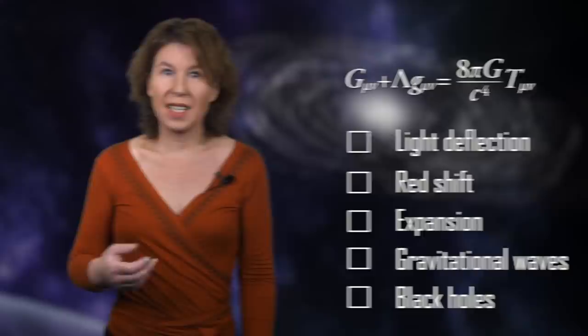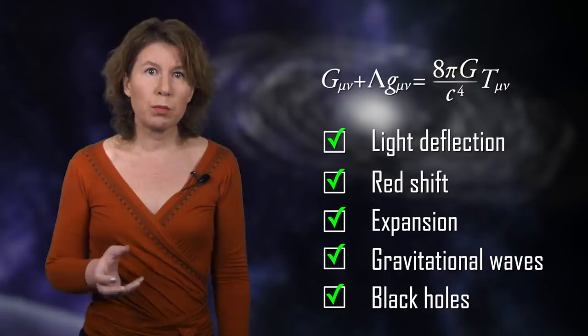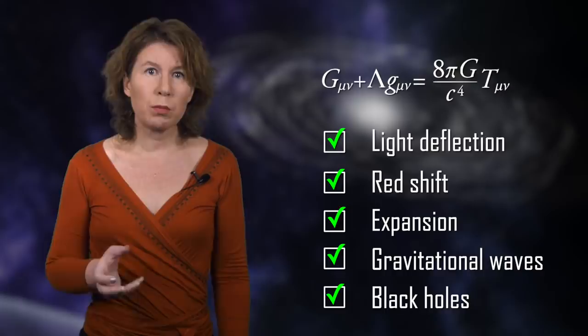It also tells us that it can take a really long time to understand a theory. General relativity is now more than a century old, and so far its predictions have all held up. Light deflection on the sun, redshift in the gravitational field, expansion of the universe, gravitational waves, black holes, they were right, right, right, and right again, to incredibly high levels of precision.